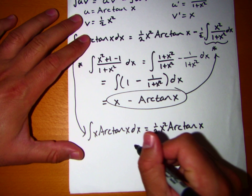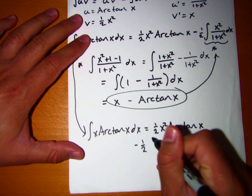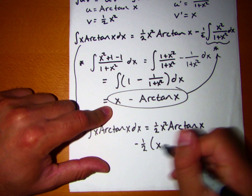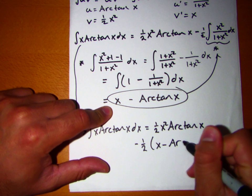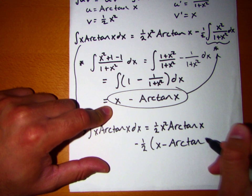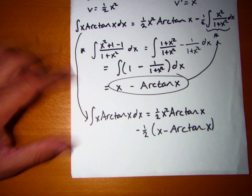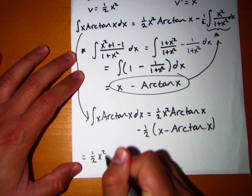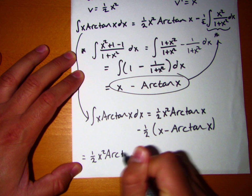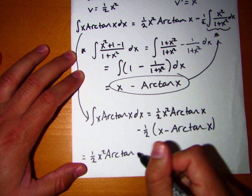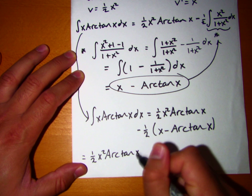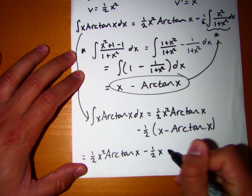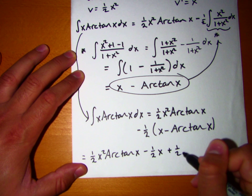We can't forget that 1 half right there. All of this stuff right here, x minus arctangent of x. So to simplify this becomes 1 half x squared arctangent of x minus 1 half x plus 1 half arctangent x.